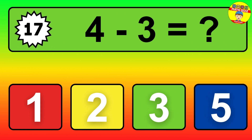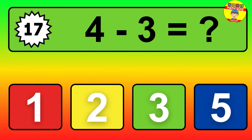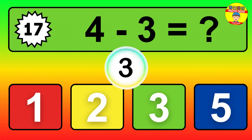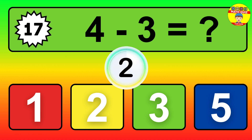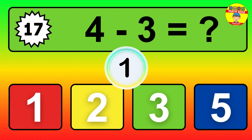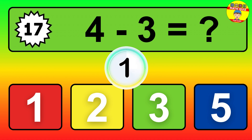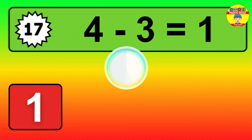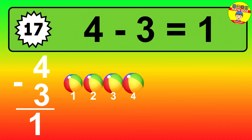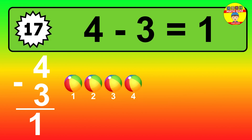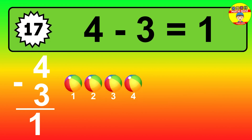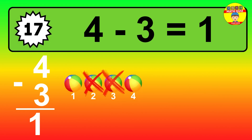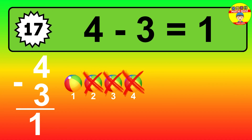Question 17. 4 minus 3 equals what? So the answer is 4 minus 3 is 1. Let's count it. 1.